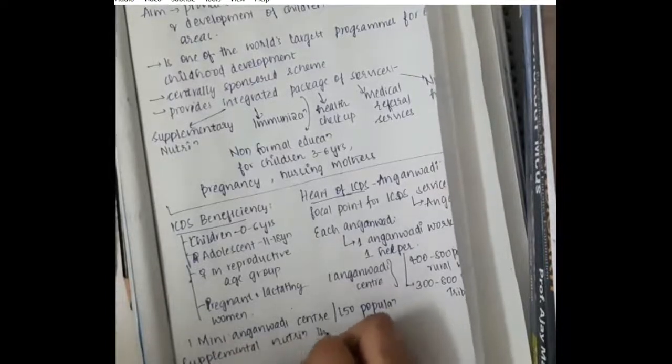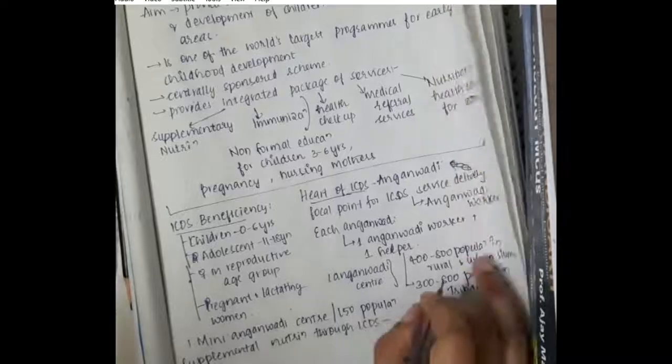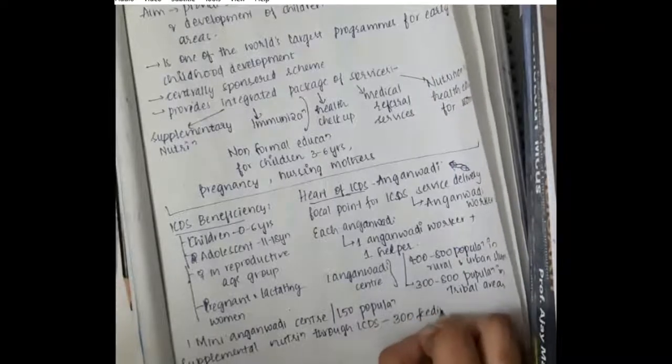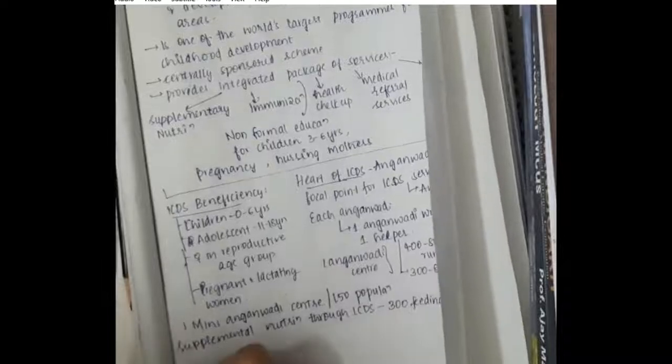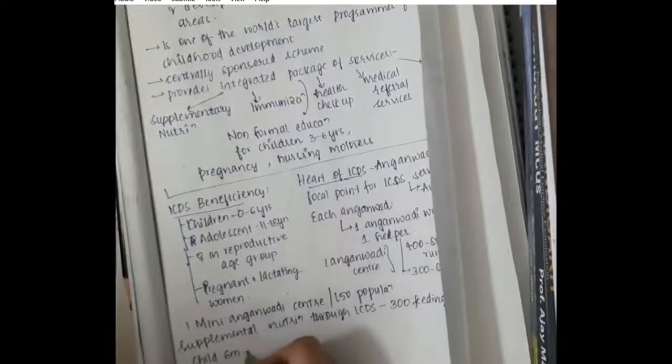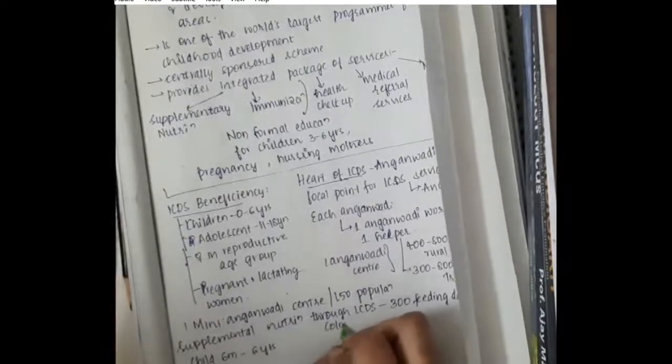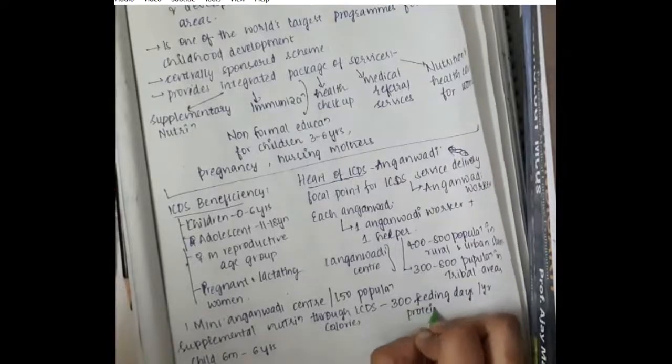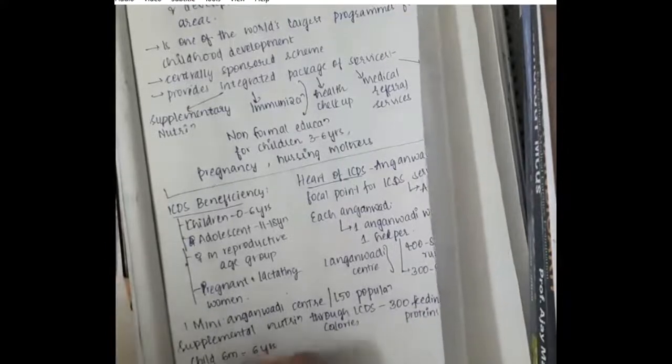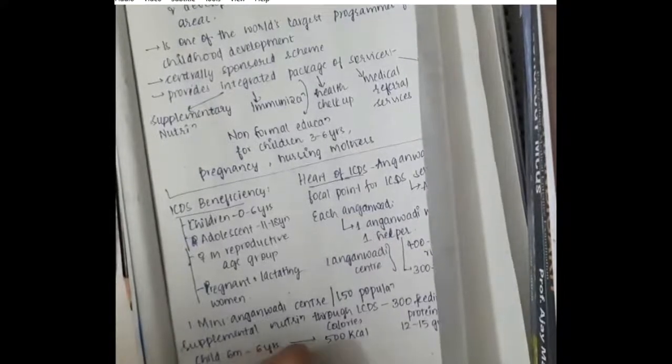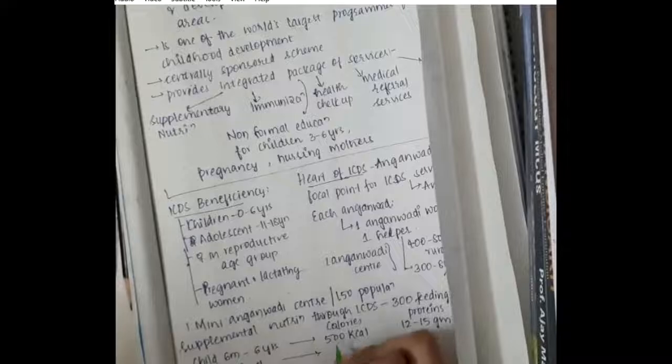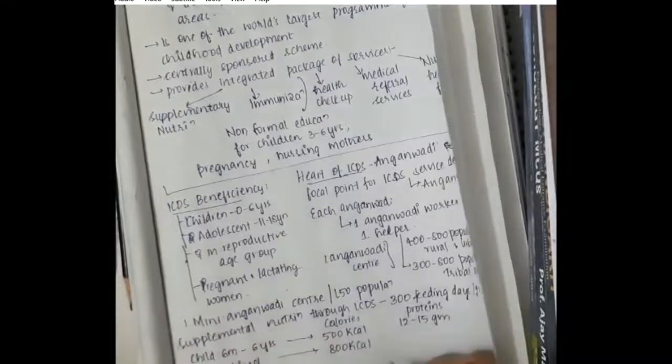Anganwadi centers provide supplementary nutrition with 300 feeding days per year. Children between 6 months to 6 years of age are provided with 500 kilocalories and 12 to 15 grams of protein per day.